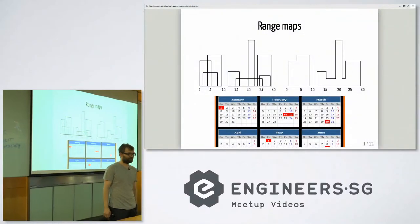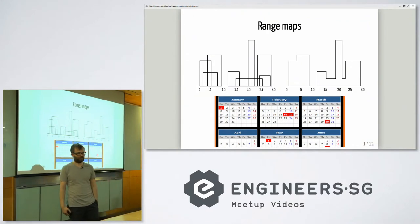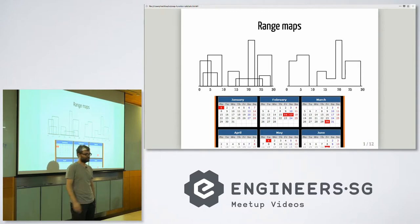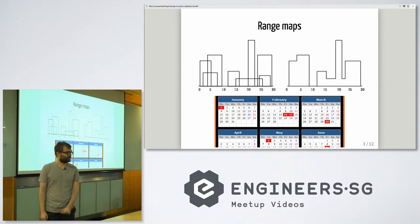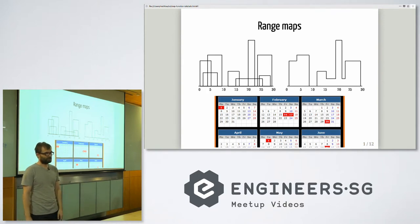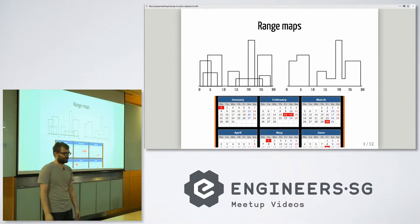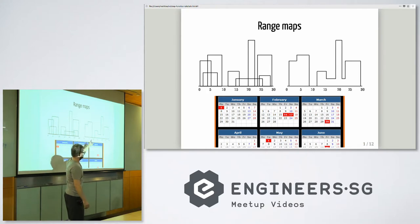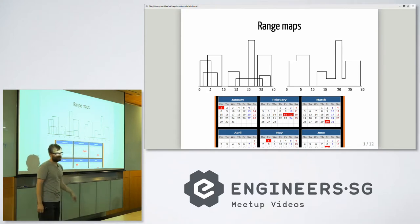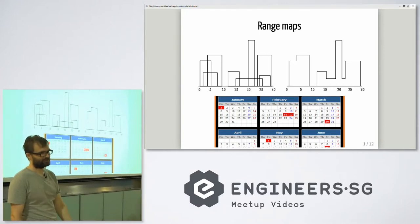Hello, I'm Matthias Goergens. I'm currently working for Goldman, where my team is doing interesting things with Erlang. I've used a number of other languages before as well. I will be talking to you about what I call range maps. It's basically a data structure that maps from keys to values, but your keys can be in a range. What crops up in practice most often for me so far is basically handling dates, which we do in finance all the time.